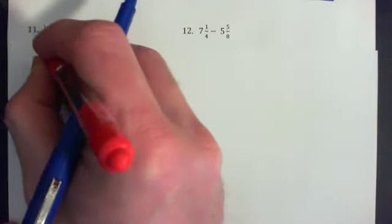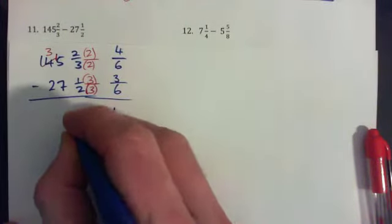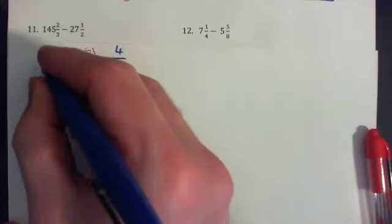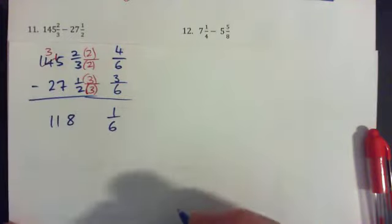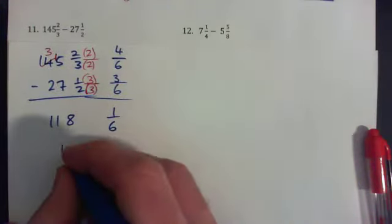So that it becomes 3, this becomes 15. 15 minus 7 is 8, and then 13 minus 2 is 11. So the answer would be 118 and 1/6. Let me write them beside each other.